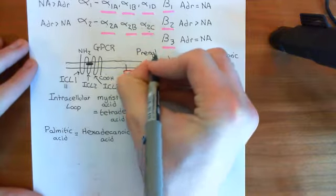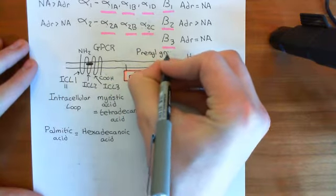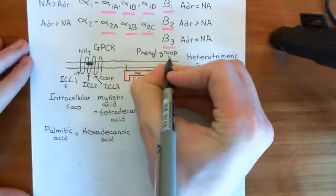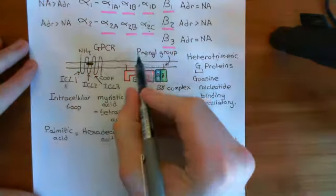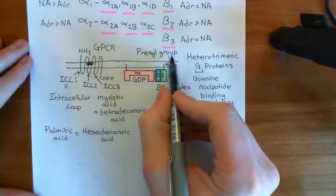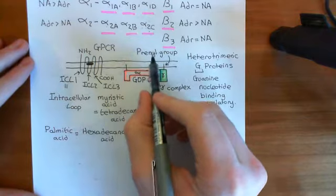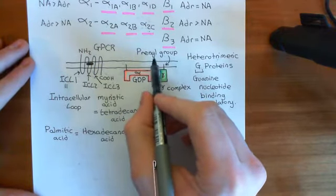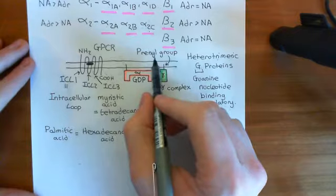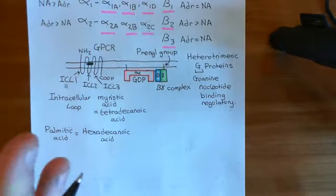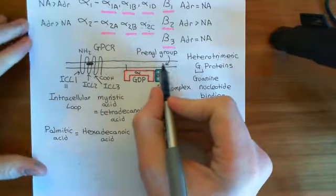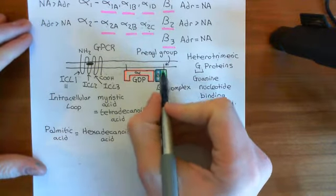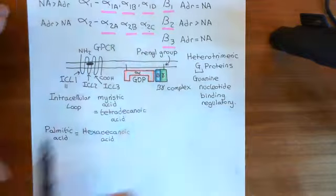The prenyl group is an oligomer of isoprene. If it's made of three isoprene molecules, it's called a farnesyl group. If it's four isoprene molecules, it's called a geranylgeranyl group. The important thing is that this is a long hydrophobic molecule that implants into the hydrophobic core of the lipid bilayer and holds the beta-gamma complex at the inner leaflet.